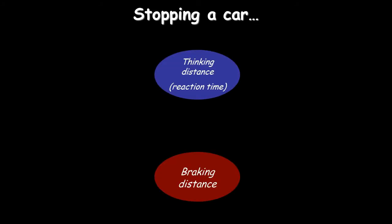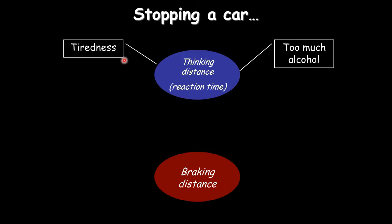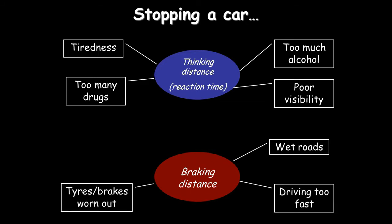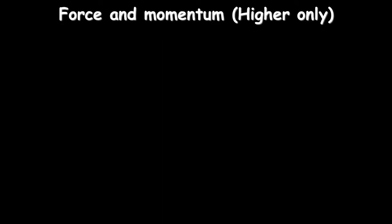A common question: what factors affect the distance a car travels while stopping? It comes in two parts. First, the driver travels a distance while thinking about stopping — this is thinking distance, affected by alcohol, tiredness, drugs, medication, or poor visibility. Second, braking distance depends on the condition of the car and road: wet roads, bald tires, worn brakes, and icy roads all increase braking distance. Add the two together for overall stopping distance.